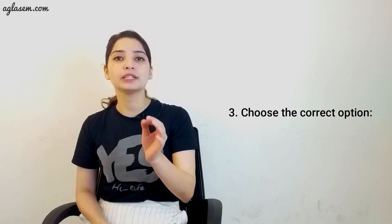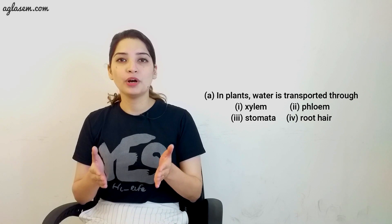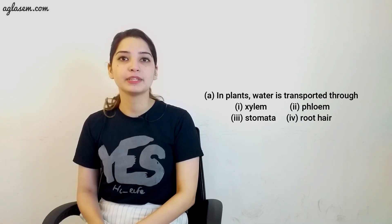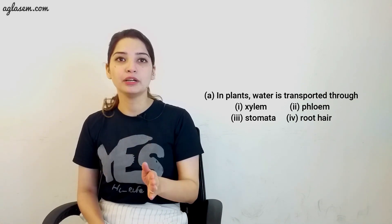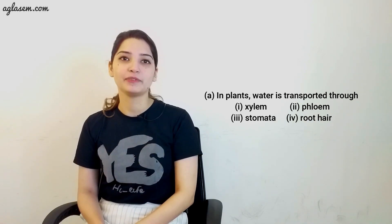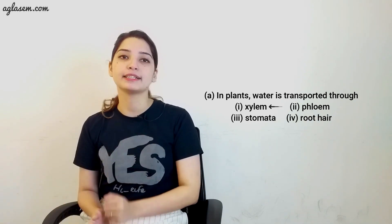Coming on to question number 3, choose the correct option. A, in plants, water is transported through: first, xylem; second, phloem; third, stomata; fourth, root hair. The answer is first, xylem.